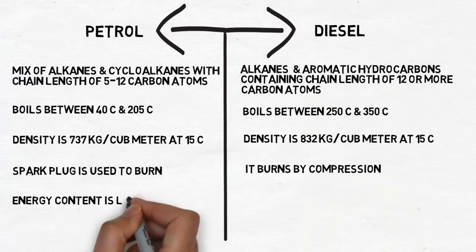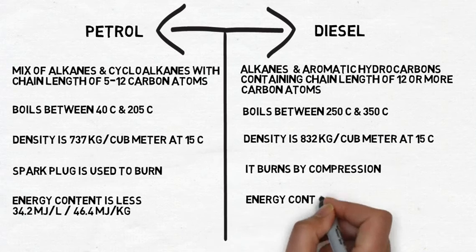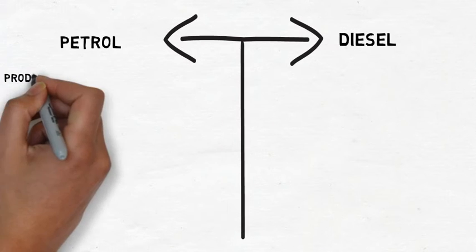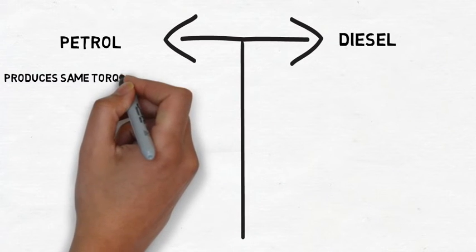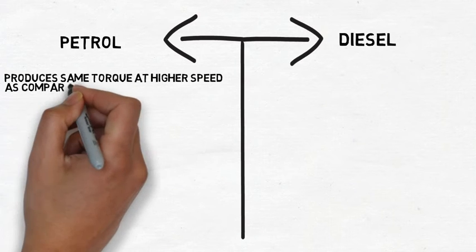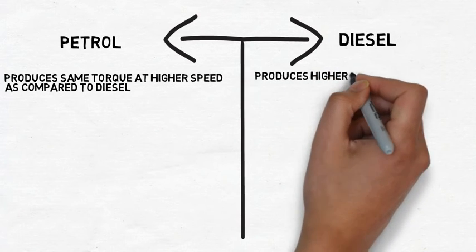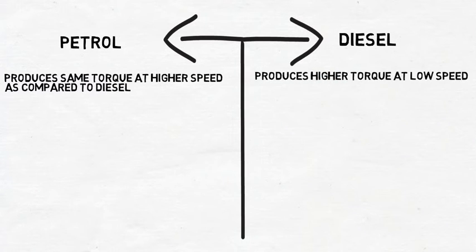Energy density of petrol is less as compared to energy density of diesel. Petrol produces the same torque at higher speeds as compared to diesel, while diesel produces higher torque at low speeds.